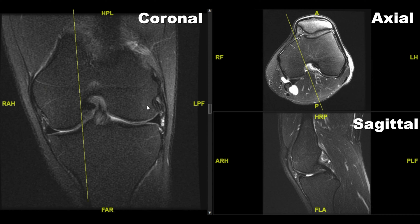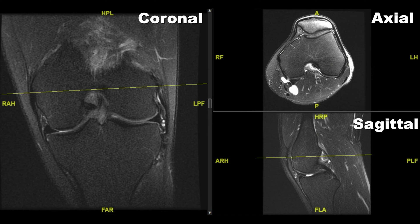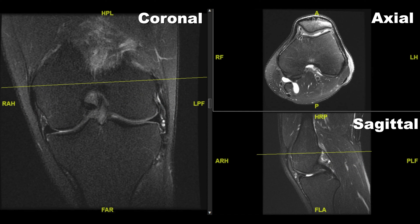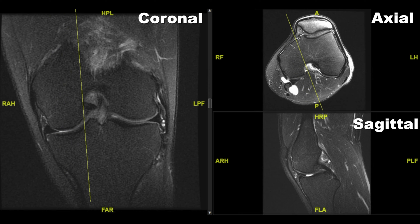What we've got pulled up here is an actual knee MRI scan, and if you'll notice there are three windows here. Each one of these windows represents a different perspective on this knee MRI. You can see how I can scroll through each window, each set of images. That's really what the MRI is — it's a set of cross-sectional images through a structure.